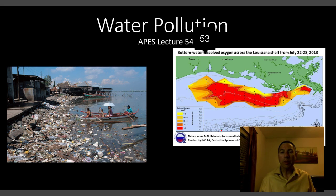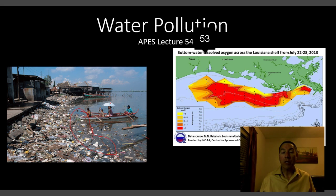Water pollution is a huge concern worldwide. It's not just a problem in developing countries like you see here — this is in Korea somewhere, but you can see all this trash and debris floating around in the water, washed up on the shore. These people fish and eat the fish from this area, swim and bathe in it, and their restrooms are probably right there too — they probably defecate in the same water in which they fish. So it's not a very good scenario for water quality in developing countries.